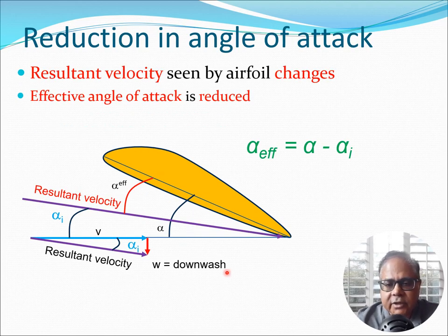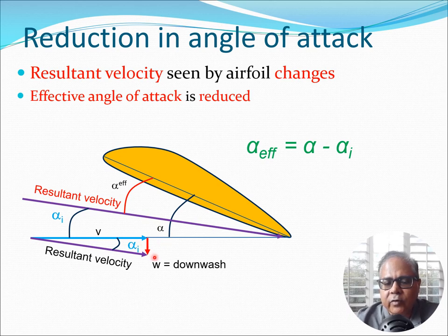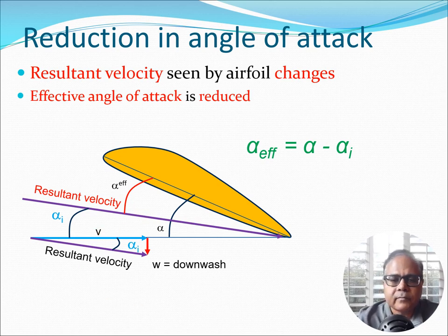The resultant velocity seen by the airfoil section changes in a finite wing situation. The airfoil section would have seen velocity V at angle of attack alpha, but because of the presence of downwash w, the resultant velocity is given by the purple line shown here, and the effective angle of attack reduces to alpha_effective, where alpha_effective equals alpha minus alpha_i. From geometry we can clearly see this angle reduction, since w is a downwash velocity acting downwards.